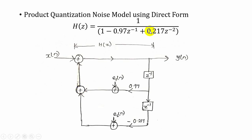Next, that is added with the third term, which is 0.217z⁻². This is also a coefficient of y(z), so the output y(n) is delayed by two units and multiplied by −0.217. At the output of this multiplier, because of round-off, an error e2(n) is introduced — that is the product quantization error. Adding these gives us the product quantization noise model.